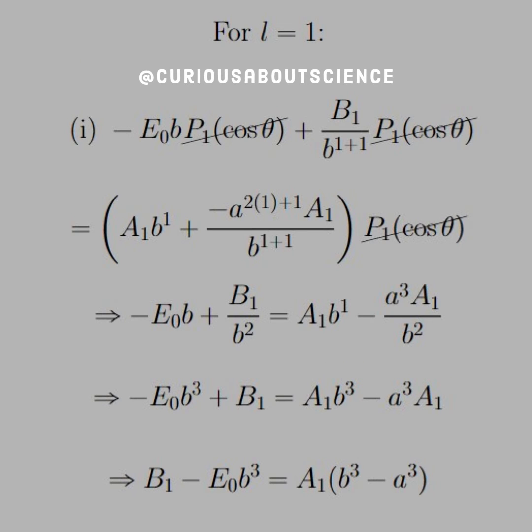So moving forward, for the case of L equal one, we substitute that in and we see that all the Legendre polynomial terms, P1, cancel out with one another. Note that for BL, we substituted in what we found from the original round of boundary conditions. So we substitute that in, we put one in wherever we see an L and we're left with this expression down at the very bottom. B1 minus E naught B cubed equals A1 times B cubed minus A cubed. Again, we're just concerned with what's going on inside that region highlighted in the question.